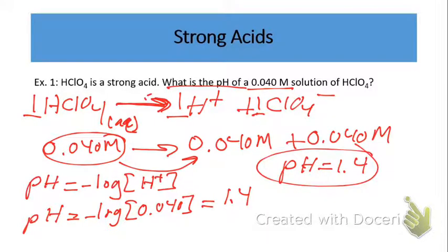Now we find the pH of our strong acid solution. We know the H+ concentration, and pH equals the negative log of the H+ concentration. Therefore, the pH equals the negative log of 0.040 molar, which equals 1.4. Notice it's a small number, which it should be — strong acids have high H+ concentration and therefore low pH. However, pH alone doesn't confirm a strong acid, because weak acids can also have low pHs. The pH tells us the H+ concentration in solution.